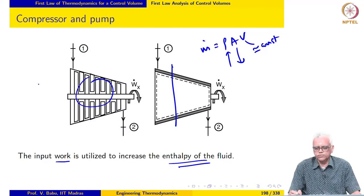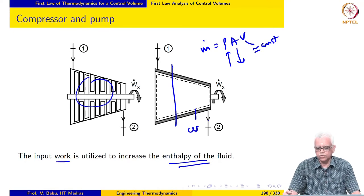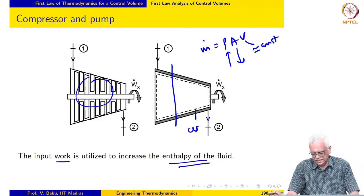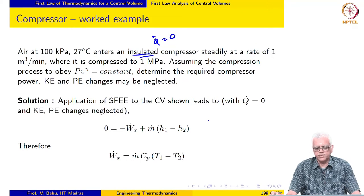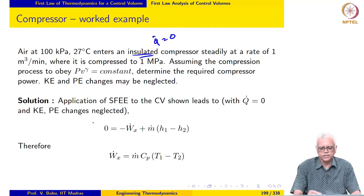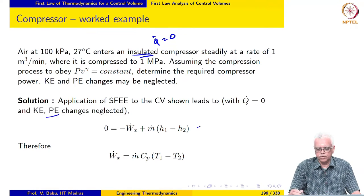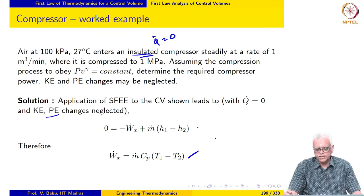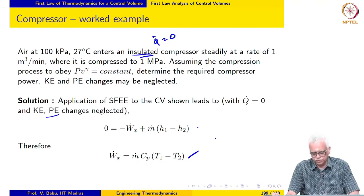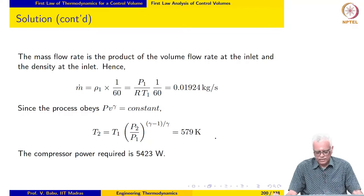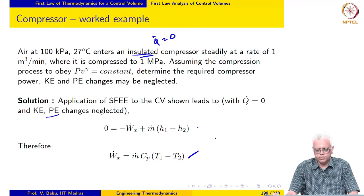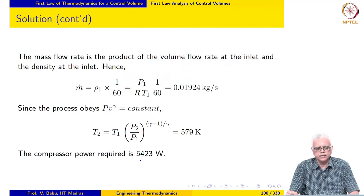Our control volume for analyzing the compressor is shown here. If we go ahead and apply the steady flow energy equation and then simplify it for this problem with Q-dot equal to 0 and KE and PE changes neglected, this is what we end up with. And since air is an ideal gas, we may write this as m-dot times Cp times (T1 minus T2). Now m-dot itself has to be evaluated — we may evaluate m-dot at the inlet.